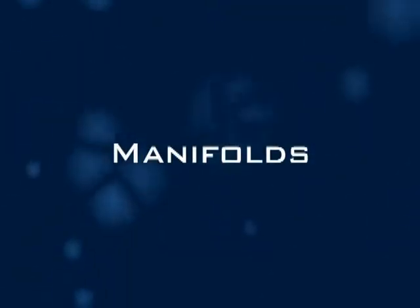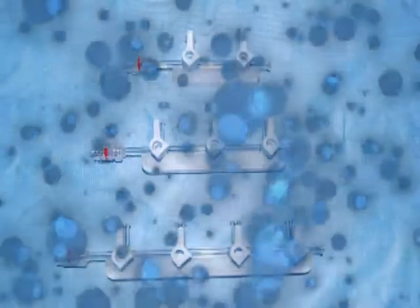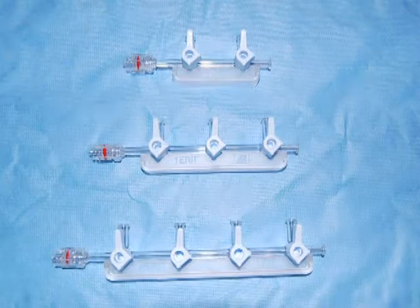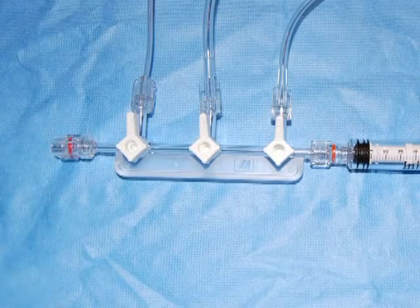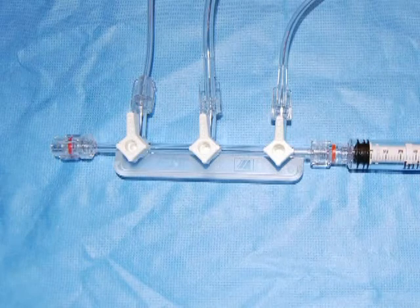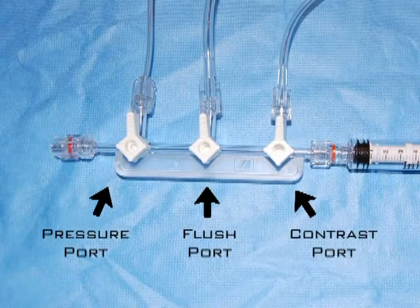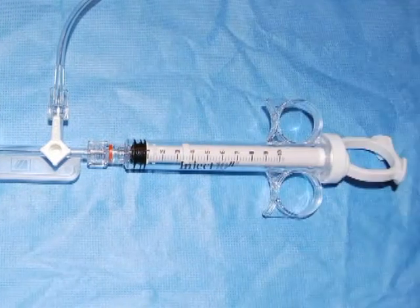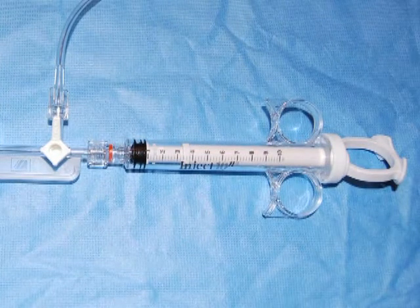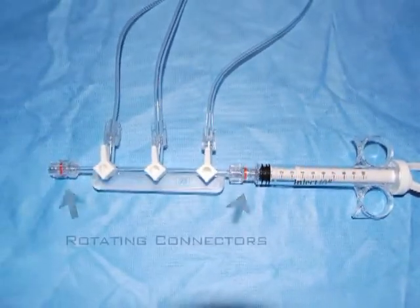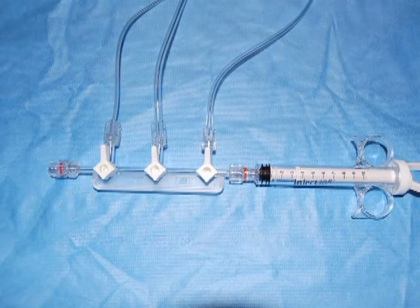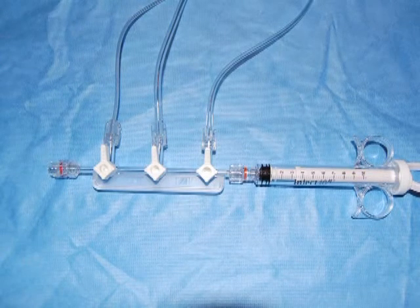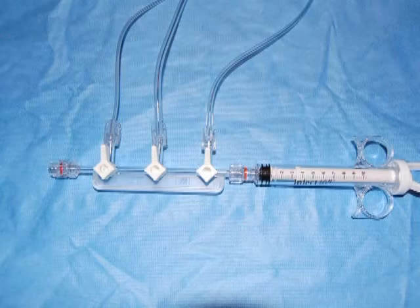Cardiac angiography is most commonly performed by manual injection through a cardiac manifold. These manifolds may come with two, three, or four ports aligned by stopcocks, with the handle of the stopcock indicating the off position. The three stopcocks most commonly used in a three-port manifold contain the pressure port, the flush port, and the contrast port. The clear syringe is important for identifying any air bubbles that may be accidentally aspirated. A rotating connector on each end of the manifold makes it easy to use. It is important to always keep the manifold syringe at least 30 degrees elevated from the table so that any bubbles that enter the manifold reside at the plunger end and are not injected into the patient.